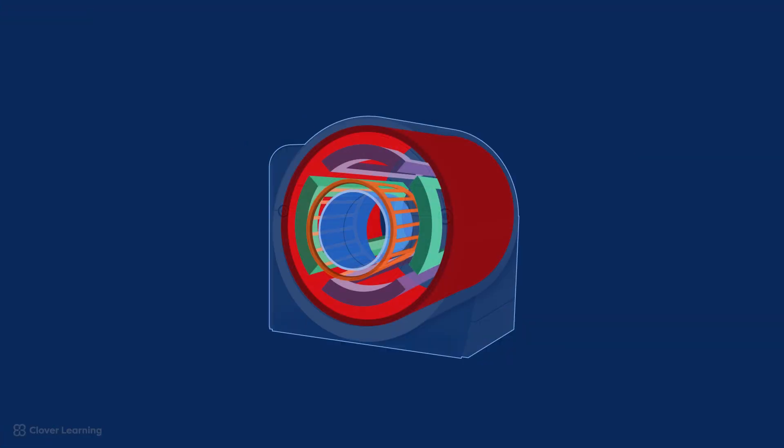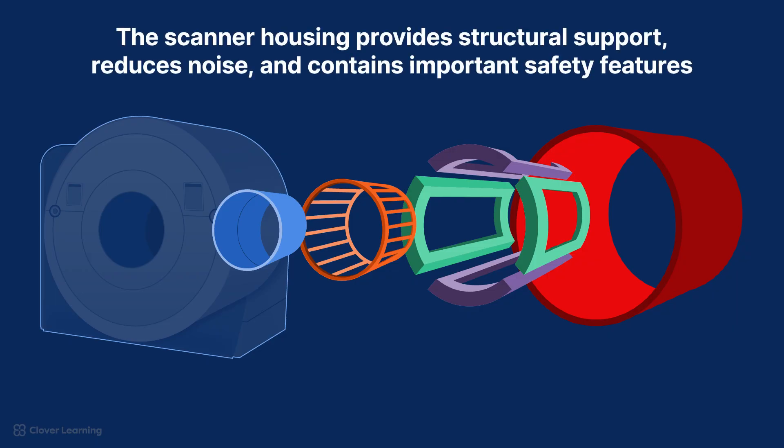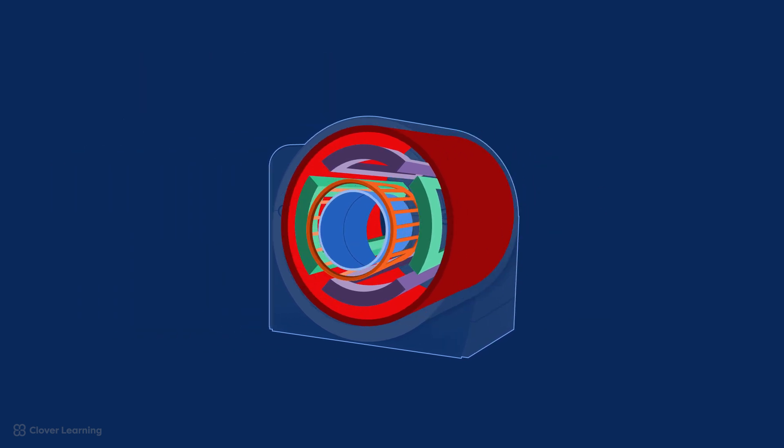The scanner housing contains the entire MRI system. It provides structural support, reduces noise during scans, and contains important safety features. The bore is the circular tunnel inside of the MRI scanner where the patient lies during an MRI scan. The bore is where the magnetic field is most uniform, or homogeneous, which is crucial for creating clear diagnostic images.